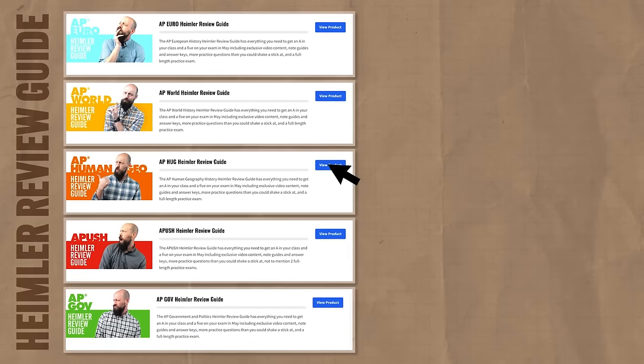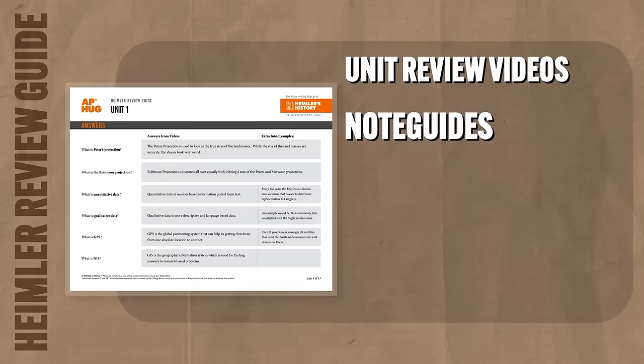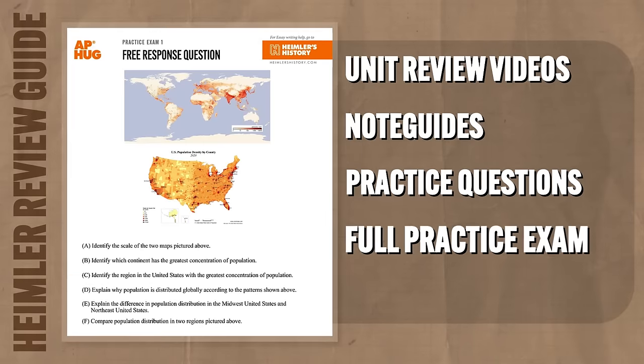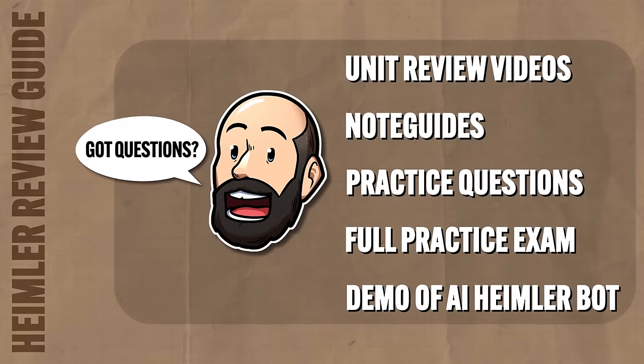But before I explain that, let me ask you a question: do you want to get an A in this class and a 5 on your exam in May? Well, if you need help making that happen, click the link in the description and check out my AP Human Geography Heimler Review Guide, which has everything you need to study as fast as possible. It's got exclusive whole-unit review videos, note guides to follow along, practice multiple-choice questions, a full-length practice exam, and answers for every dang thing I just mentioned. So if doing well is the kind of thing you're into, get that clicky finger out and have a look.